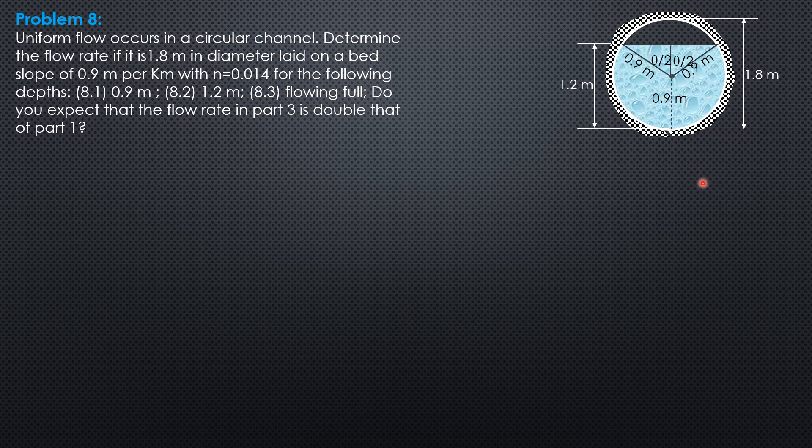So for part 1, we use the formula Q equals area to the 5 thirds, slope to the 1 half over n perimeter to the 2 thirds, which is the same as area over n hydraulic radius to the 2 thirds, S to the 1 half. So this is just the direct way so that we will not compute for hydraulic radius anymore.